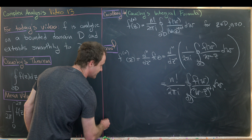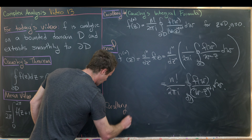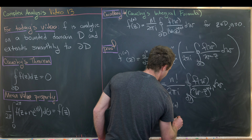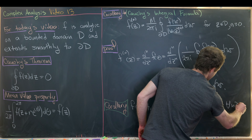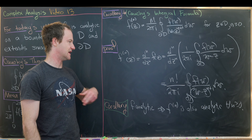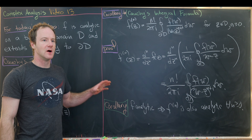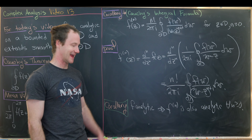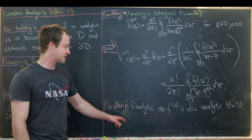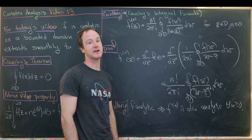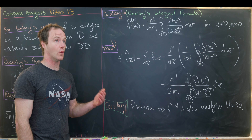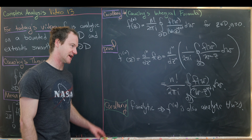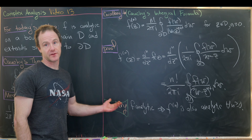A very important quick corollary follows: if f is analytic, then the nth derivative of f is also analytic for all n ≥ 0, because we can express this nth derivative via the Cauchy integral formula. This makes a big difference from real-valued functions: in complex analysis, if a function is complex differentiable, it is infinitely complex differentiable. You can find real-valued functions that are once but not twice differentiable, but such behavior is impossible for complex-valued functions.